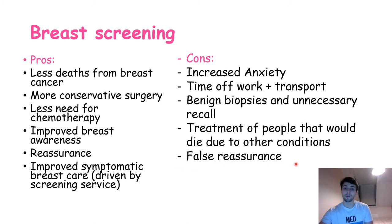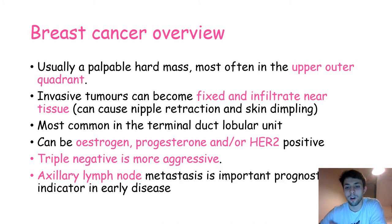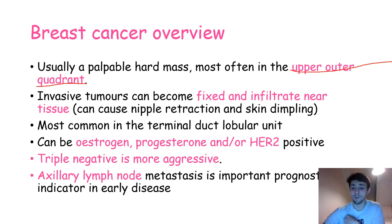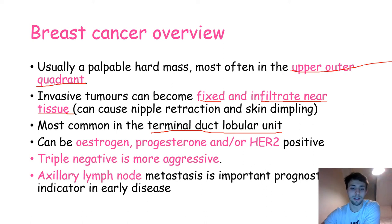A quick overview of breast cancer: it usually presents as a palpable hard mass, most often in the upper outer quadrant of the breast. Sometimes invasive tumors can become fixed, as they infiltrate nearby tissue. They can also infiltrate underlying muscles, making them very hard to move. Most breast cancers are in the terminal duct lobular unit.